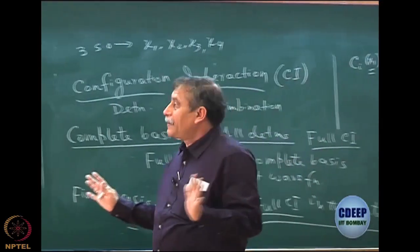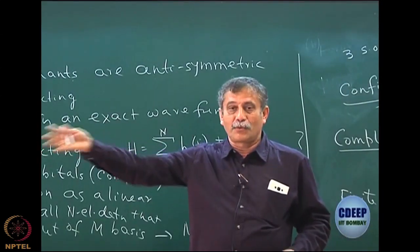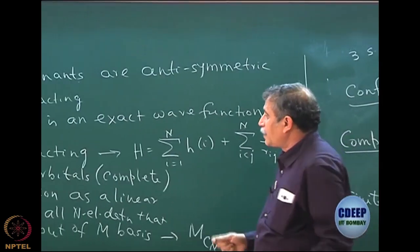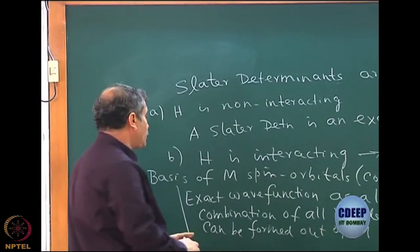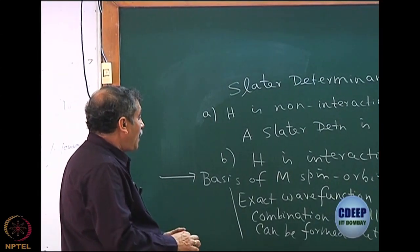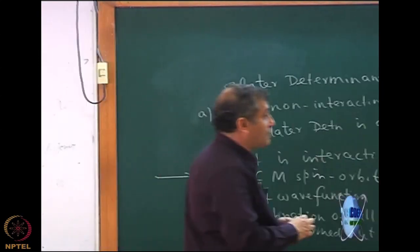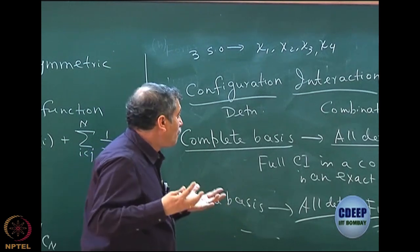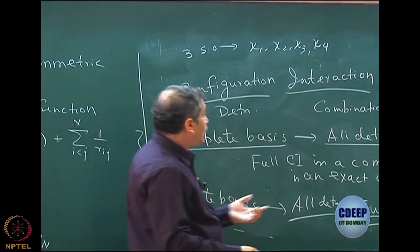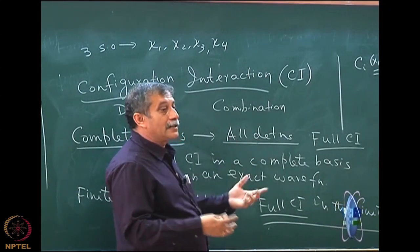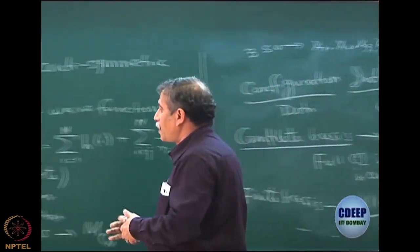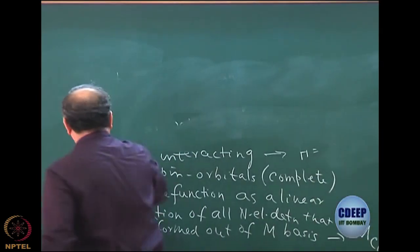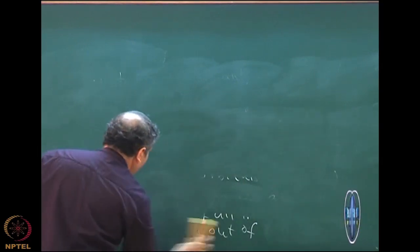Whichever determinant has the lowest energy — which can be seen from the orbital energies — gives the ground state. Once we understand that the interacting problem requires a linear combination of determinants, we must think about how to make good approximations. A good approximation always starts with a good basis: even though it is finite, it must capture most of the physical effects of the complete basis. We also cannot take all determinants in many cases, so we must choose physically important ones.